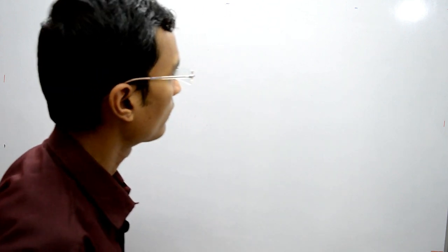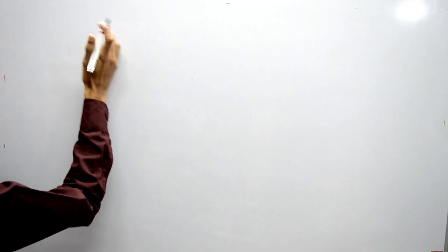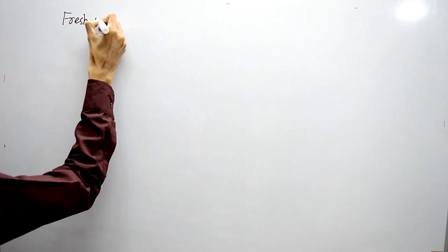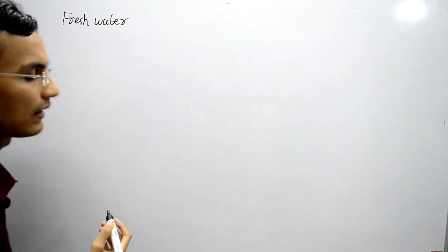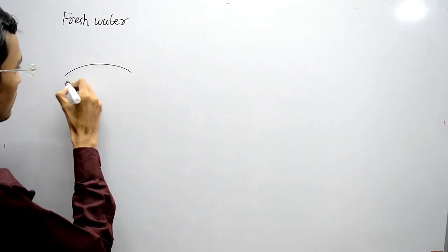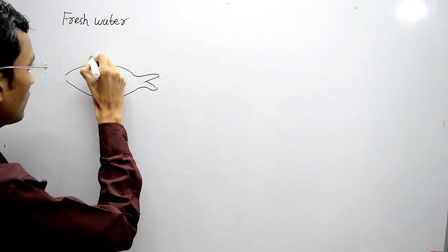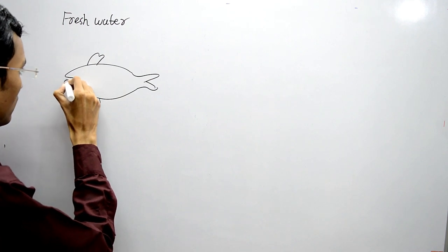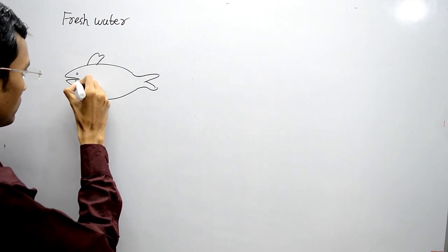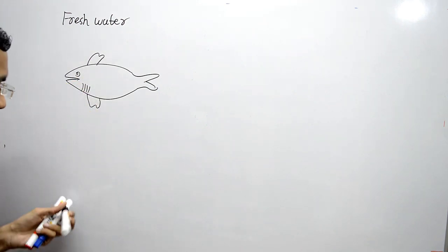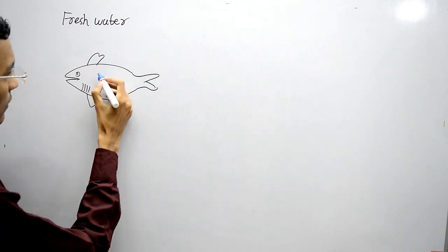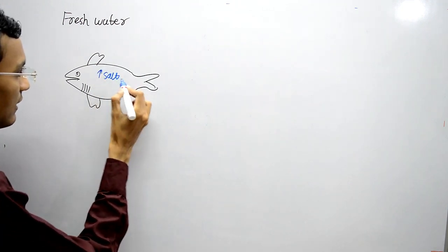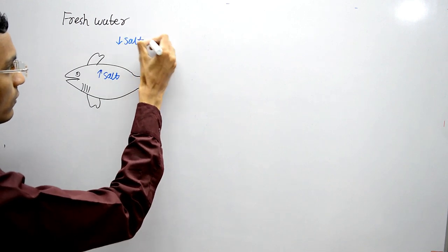Hello friends, welcome to Sandeep's Biology. In this video I will be talking about osmoregulation in aquatic animals, and especially in fishes. Let's take an example of a fish and understand what is osmoregulation. In the case of a freshwater environment, the fish living there — I will draw a diagram of a fish here — the salt concentration is higher inside the body compared to the outer environment.